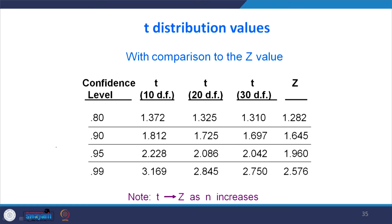A comparison between T values and Z values: when the confidence level is 95%, the Z value is 1.96. For different degrees of freedom, when degrees of freedom is 10, T is 2.228; when 20, it is 2.086; when 30, it is approximately 2.0. So the value of T approaches Z as n increases, eventually reaching 1.96. This table shows that as degrees of freedom increases, the T distribution gets closer to Z with a value approaching 1.96.